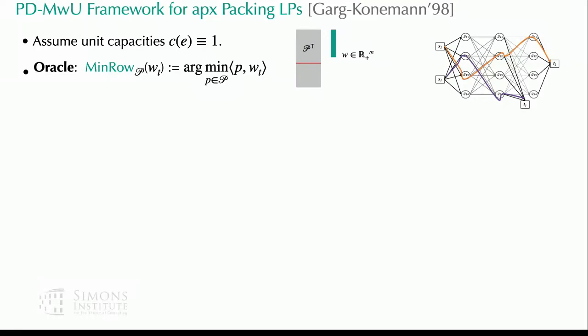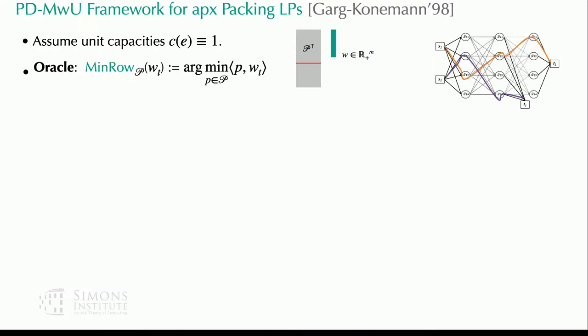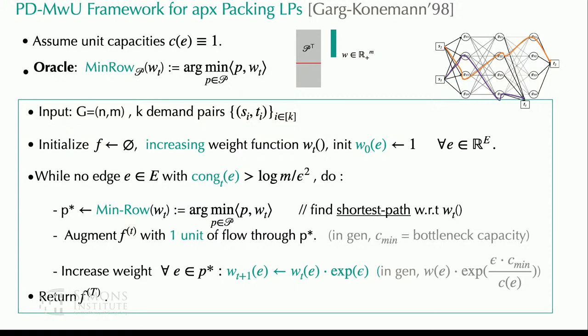In the case of multi-commodity flow, where each row is a path and W is a non-negative weight function, the min-row oracle is simply computing the shortest path. But for general network design problems, rows could be cuts, matchings, subgraphs — anything. So the min-row oracle is a very general primitive. Here's the full algorithm.